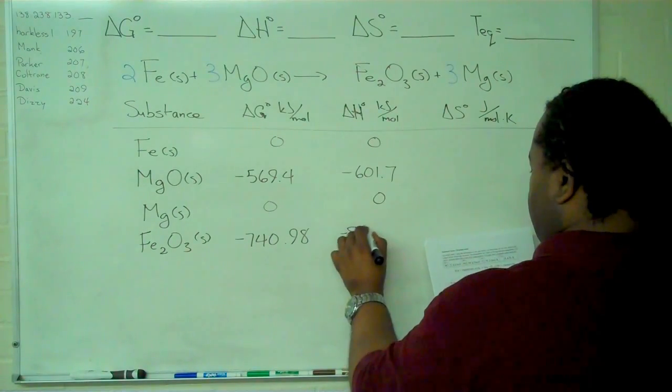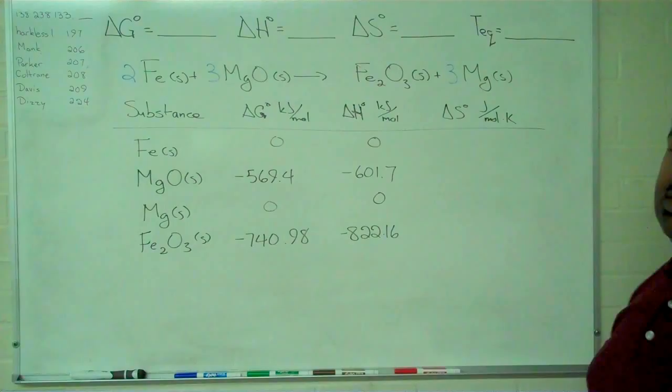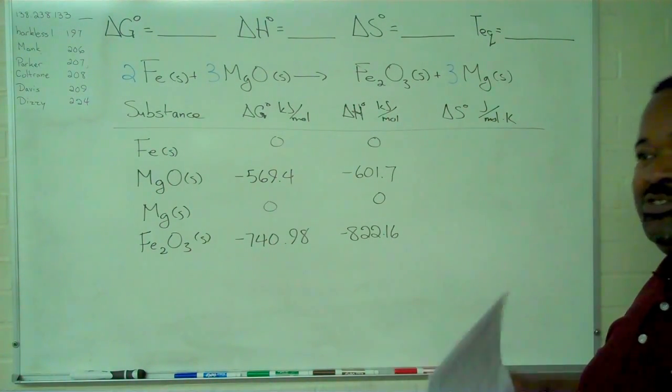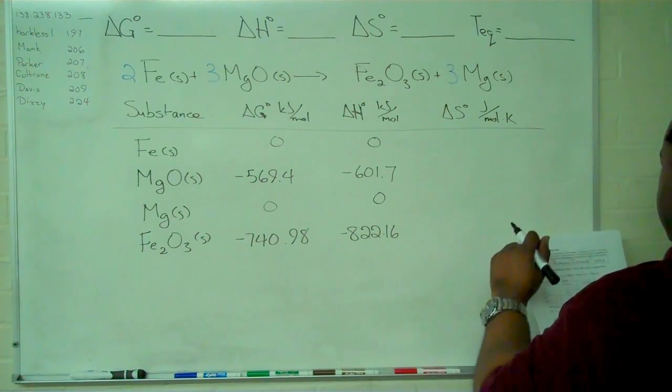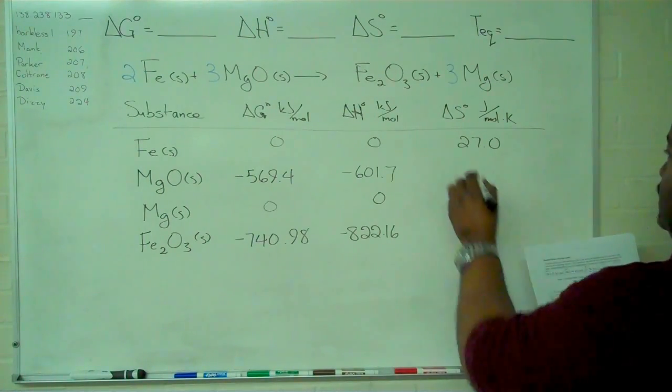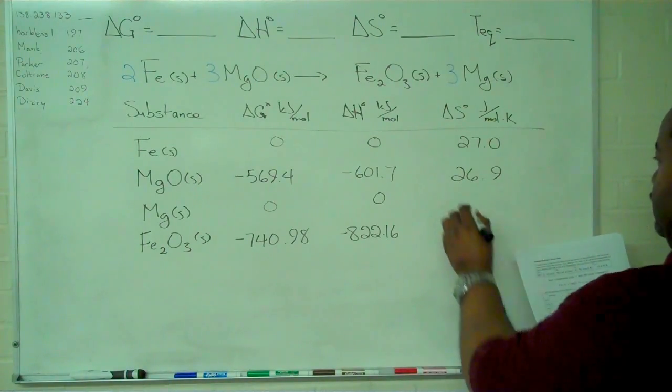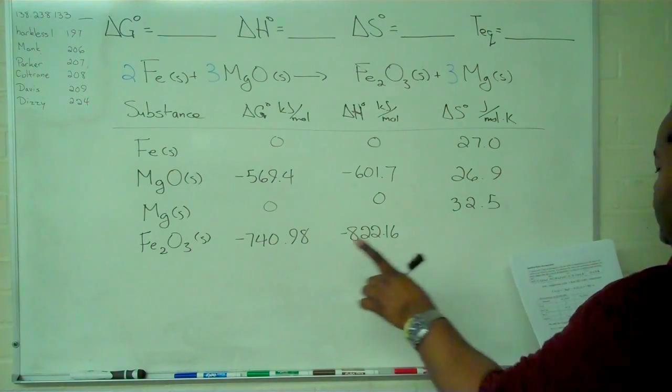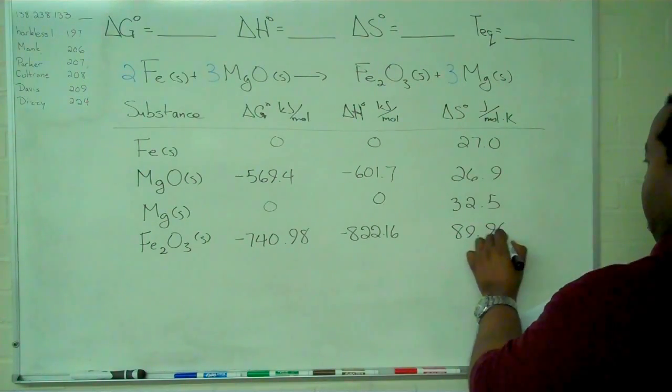and minus 822.16. And then everything will be non-zero for our entropy, because we're not dealing with pure crystals at 0 degrees Kelvin. So for our solid iron, we have 27.0. For magnesium oxide, 26.9. For the solid magnesium, 32.5. And for the iron 3 oxide, 89.96.